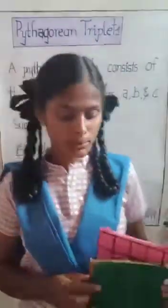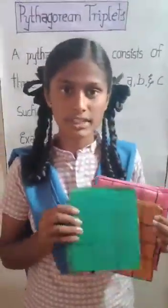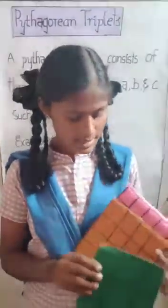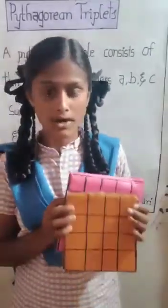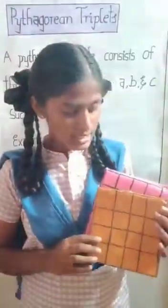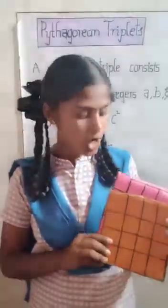Here is a box. In the first row, we have three green boxes. And here are orange boxes. In the first row, we have four orange boxes.